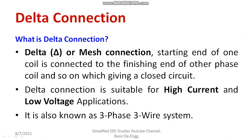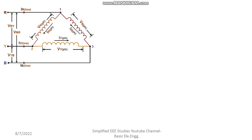In the previous session, I have discussed what is delta connection, how the delta connection can be done, why delta connection is required. Moving on to the discussion, I will be deriving an expression for the line voltage and phase voltage and the line current and phase current in a delta connected system.